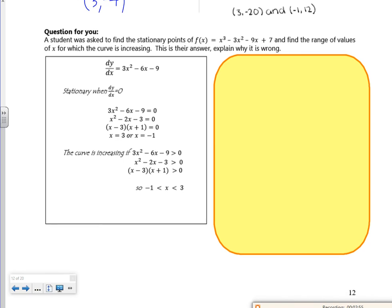So on the exam papers, you get a random question somewhere in amongst your three papers that will give you how someone's done it and you have to try and find the errors. So let's have a look then. So it says a student was asked to find the stationary point and find the range of values that it's increasing for. So let's have a look then. So how I differentiated one. So 3x squared minus 6x minus 9. So that's okay.